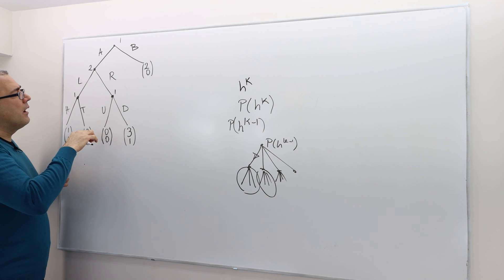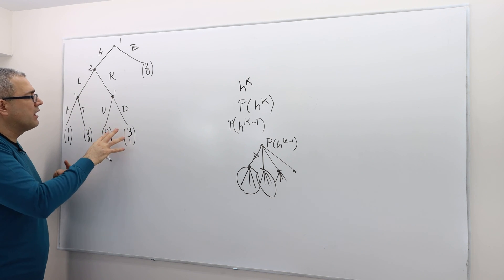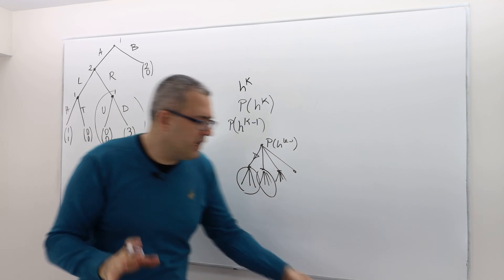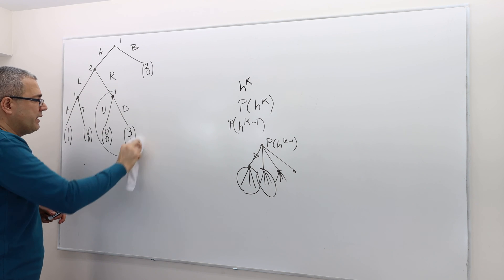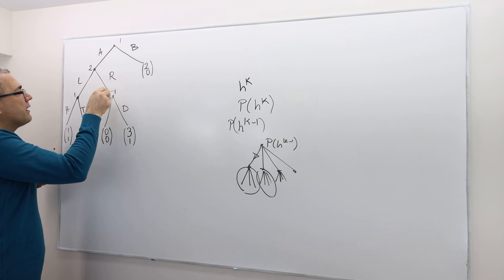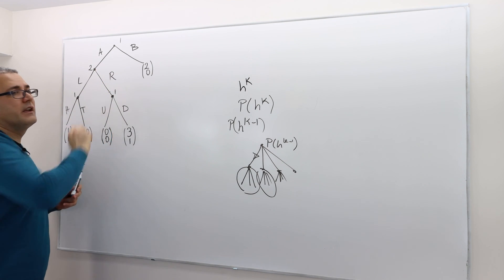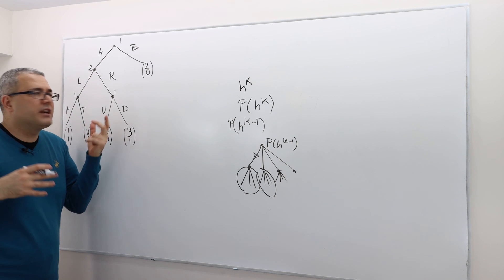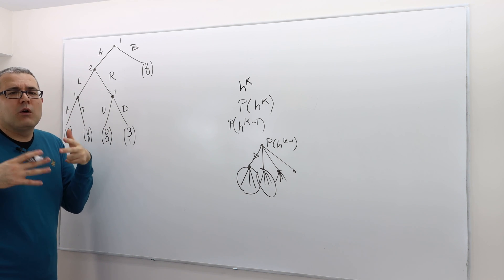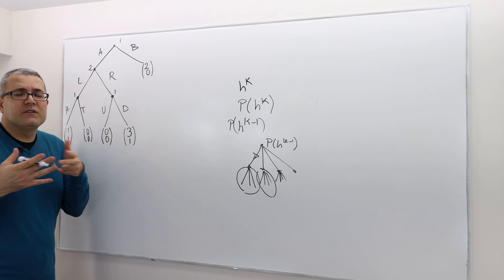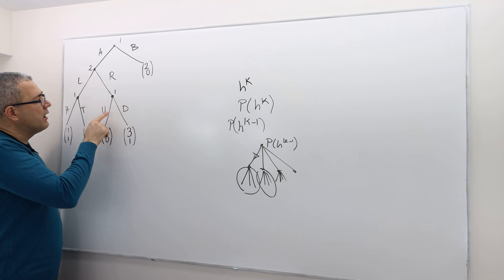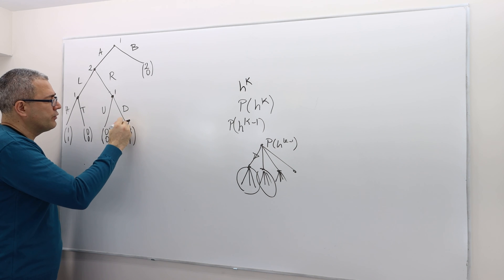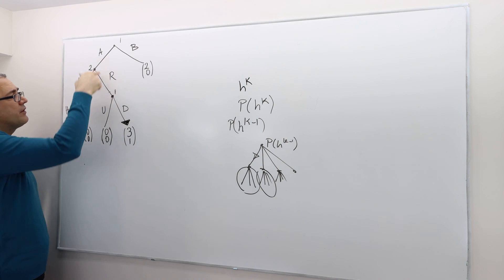After history AR, what would be the optimal action for player one? Player one is just making a move alone, without worrying about opponents, since there is no simultaneous move. If he chooses U he gets payoff zero, and if he chooses D he gets three. So obviously he's going to aim for three and play D after history AR. However, after history AL, he's going to go for payoff one, meaning he's going to play H.